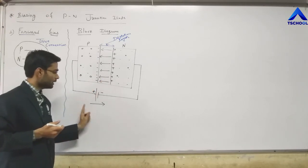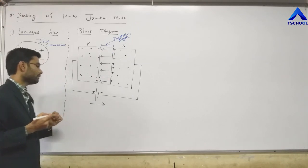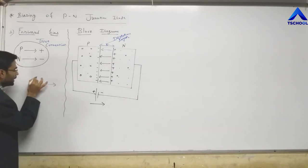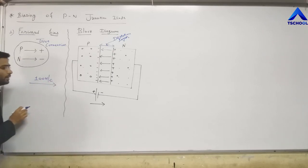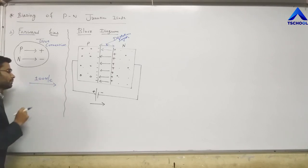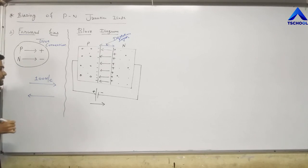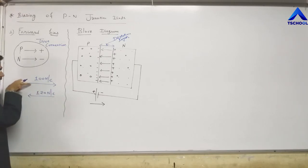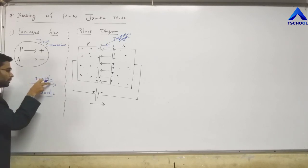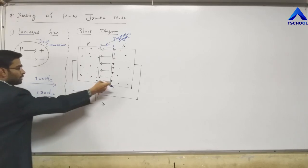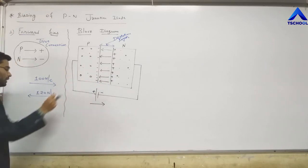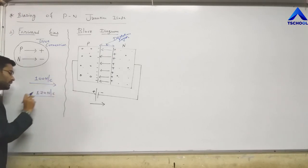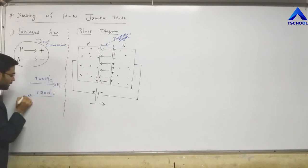Forward bias and reverse bias connections are opposite to each other. Now, one by one we will observe the forward bias and reverse bias. In a practical situation, when we connect the battery, the electric field from the external battery is 100 N/C in one direction, and the electric field already set up inside the device (from N to P) is 120 N/C in the opposite direction.